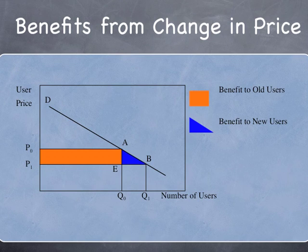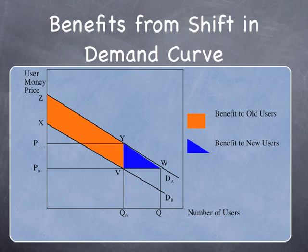For the rectangle, the base is 0 to Q0. So if we're widening the road and lowering the time, we get this kind of benefit measure. Now we might do something which changes the demand curve. We might similarly give benefits to old users and benefits to new users if we shift the demand curve. We might make it so that people are willing to pay more because they're getting a higher benefit. This might be from a change in land use or a change in quality — something that improves people's willingness to pay.